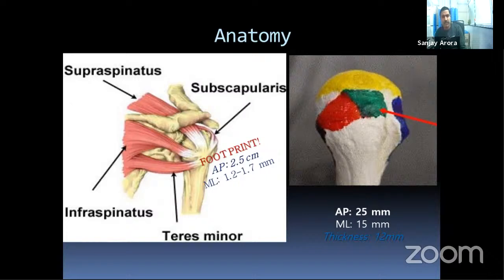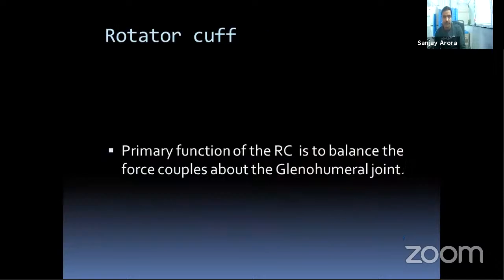The most commonly ruptured muscle is the supraspinatus. Its footprint measures approximately 25 mm in the anteroposterior dimension and an average of 12–17 mm mediolaterally, with an average thickness of approximately 12 mm. The primary function of the rotator cuff is to balance the force couples at the glenohumeral joint.